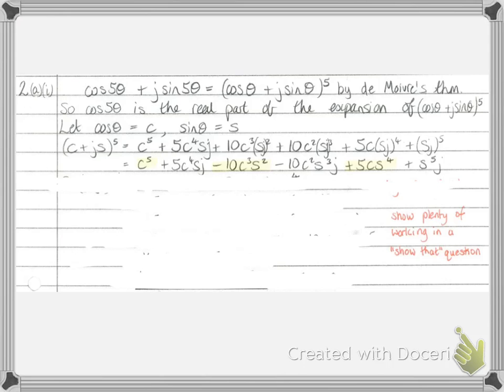So then, being very careful with those brackets, I would expand that. For example, the term with (js)^3, well, j^3 is -j, because j^2 is -1, and then it's multiplied by another j. So this term became negative with a single j. Similarly for all the other terms.